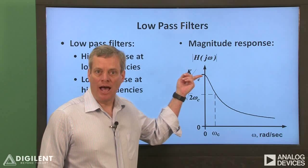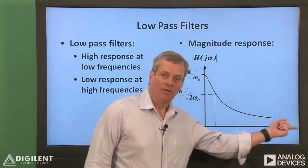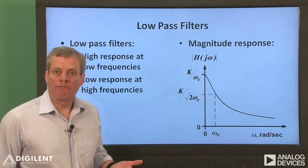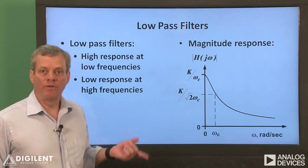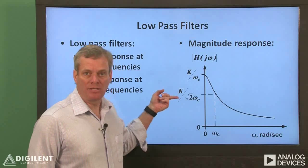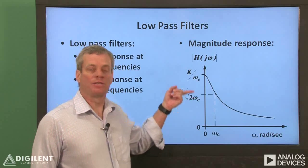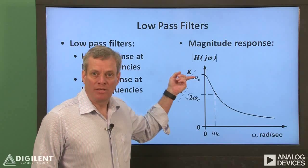The DC gain is fairly high, and the high frequency gain goes to zero. The cutoff frequency of a filter is defined as the frequency where the magnitude response is 1 over root 2 times the maximum magnitude response of the filter.